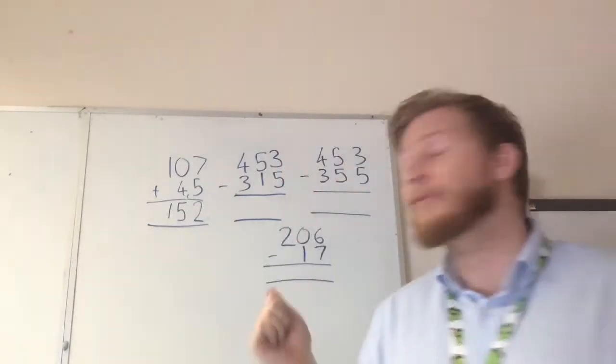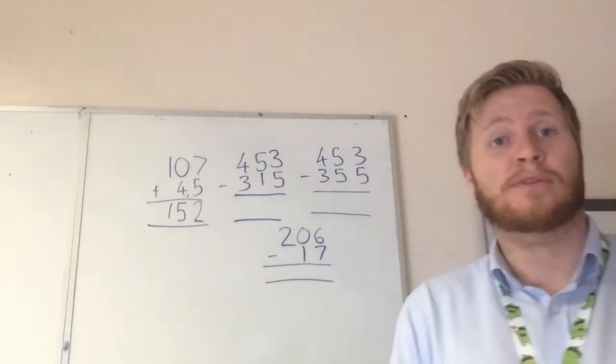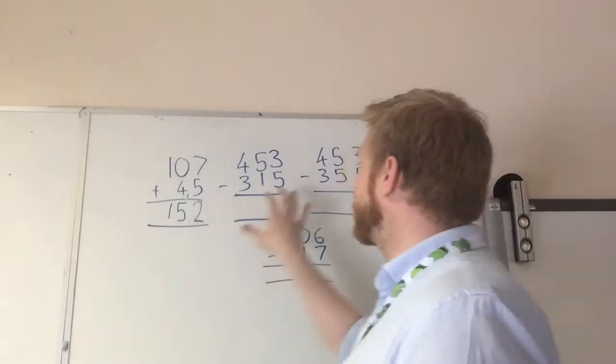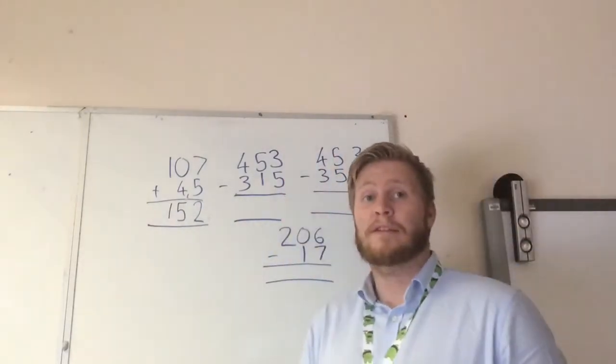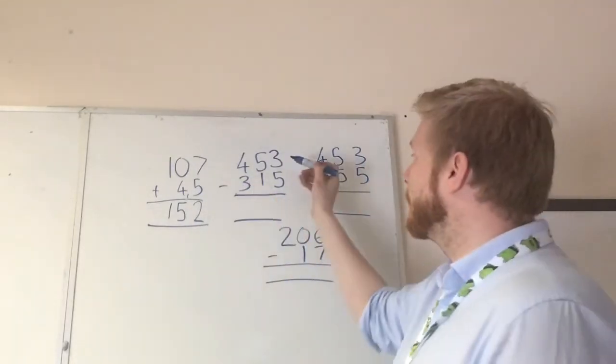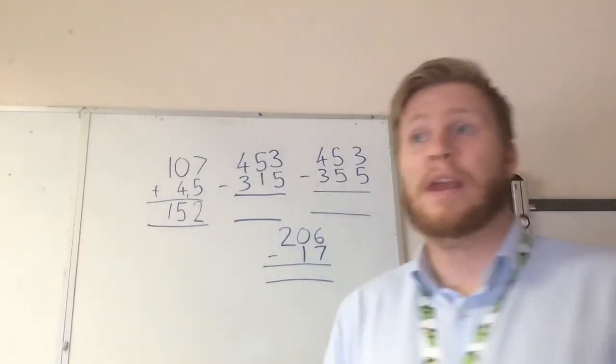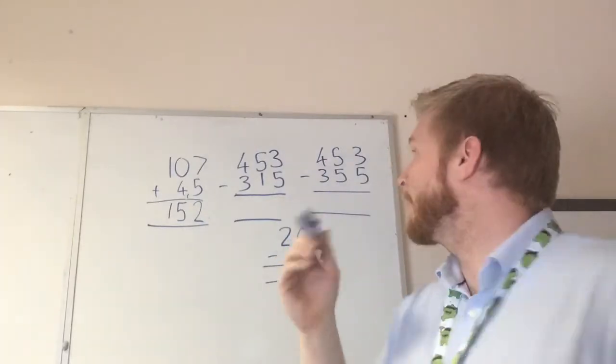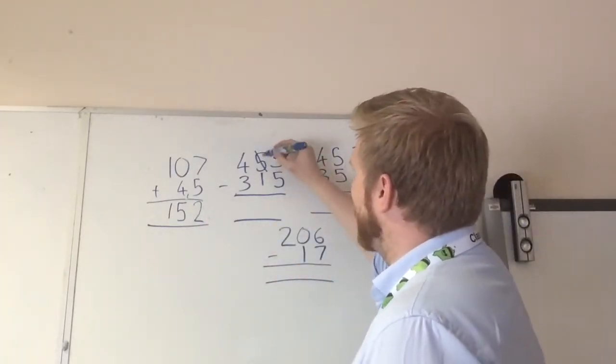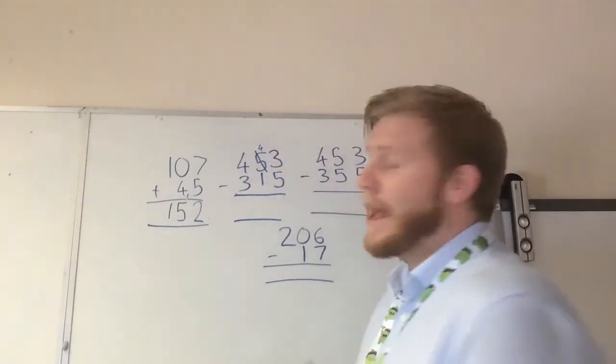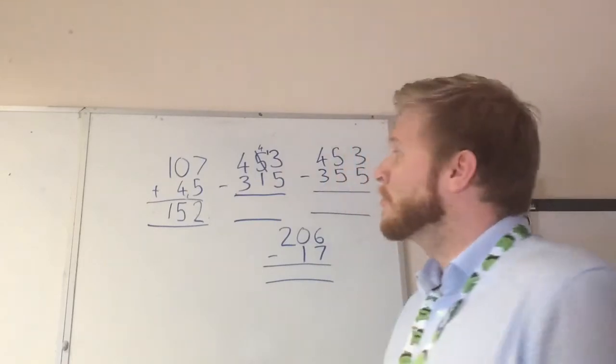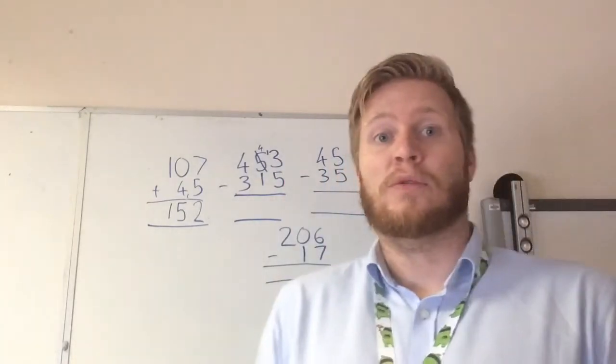Okay, next I've got 3 different take away sums, subtraction sums here. Okay, because there's different things that can come up when we're doing these. Okay, so we're going to do this one first, which is 453 take away 315. Firstly, we have 3 take away 5. Okay, we can't take away 5 from 3 because it's bigger. So what we have to do is we have to turn that into 4 tens rather than 5 and carry 1 over. Okay, so now we have 13 take away 5, which is a subtraction we can do.